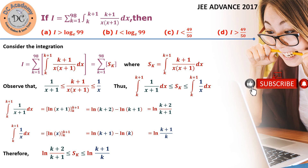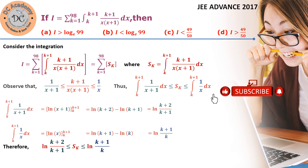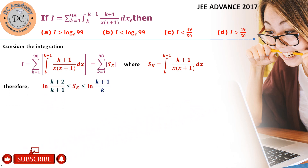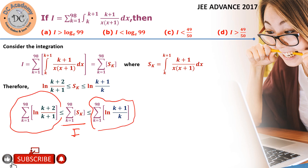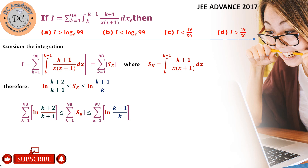We do this because the options don't require the exact value of I — we just need to find bounds: what is I less than or greater than, to determine which option is correct. Now we apply the summation k=1 to 98 throughout the inequality. The middle sum is the required I, so we need to compute the two bounding sums.